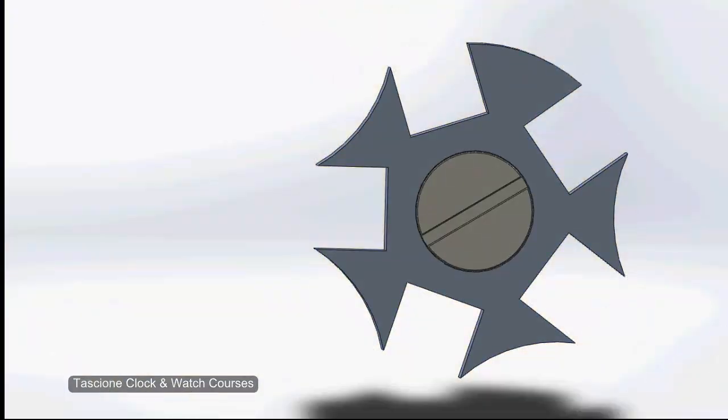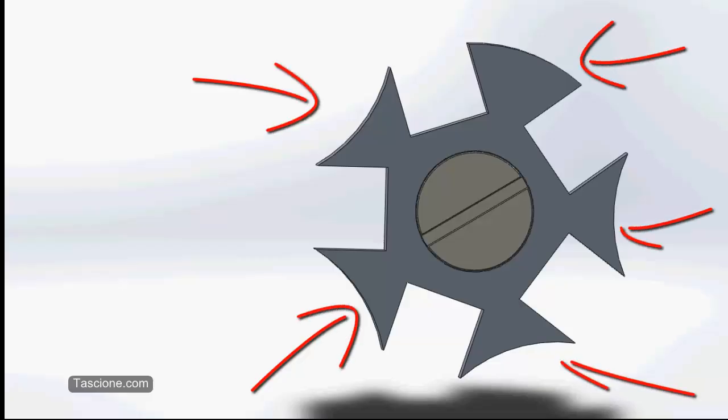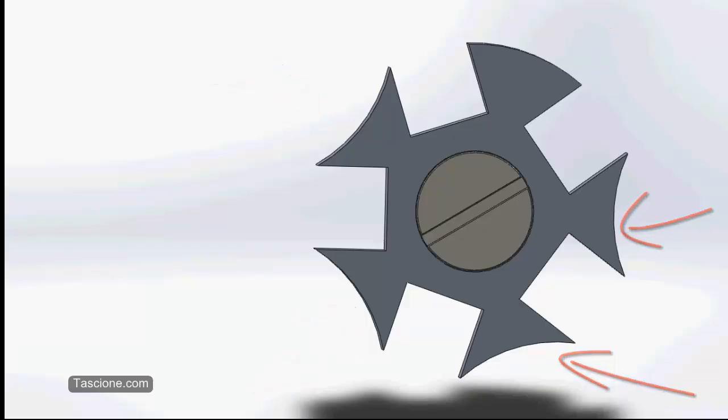The star I'm showing here has five spaces cut into it, leaving these five arms. You'll see Geneva stars with fewer and greater numbers of spaces and arms on both watches and clocks, but they all work the same way. Now, at the end of these four arms, there are concave cuts, with a fifth arm having a convex face. This convex face makes locking of the mechanism possible.